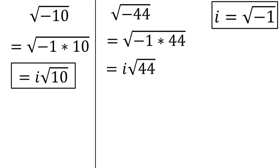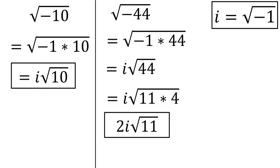But this isn't fully simplified. We can break the square root of 44 into the square root of 11 times 4. 4 is a perfect square, and the square root of 4 is 2, which can be taken out. Our final answer is 2i square root of 11.